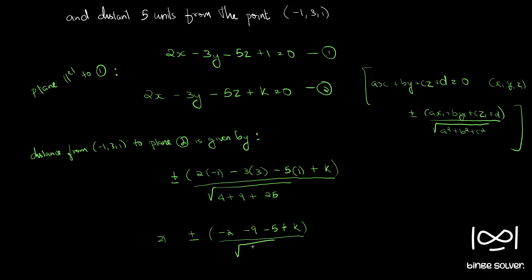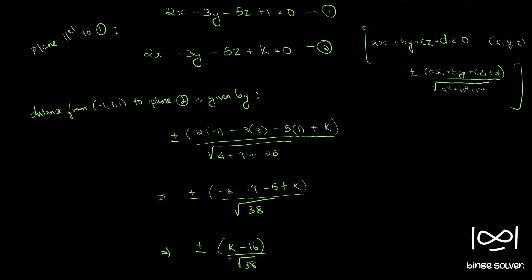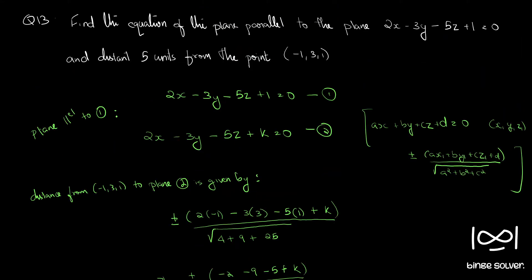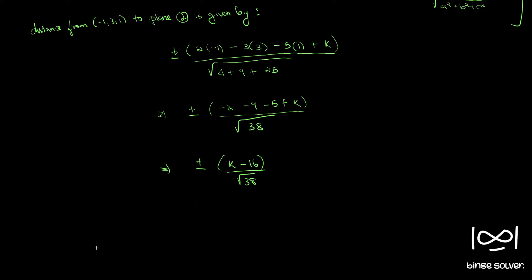Root 38 equal to root 38. So plus or minus k minus 16 by root 38, and it is given in the question that the distance is 5 units from the point.